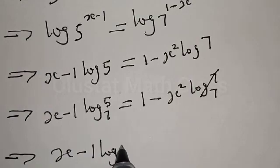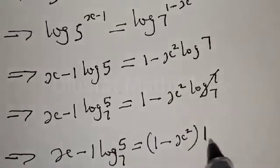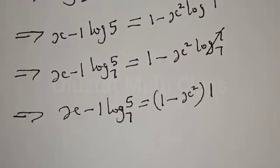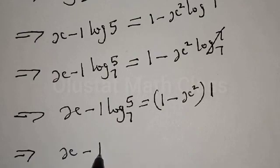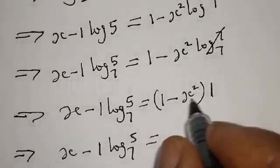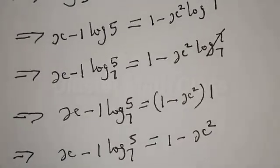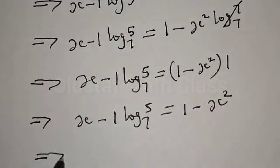Dividing both sides by log 7, this implies that we have x minus 1 times log 5 base 7 equal to 1 minus x squared, since log 7 base 7 is 1. Opening the bracket, we have x minus 1 times log 5 base 7 equal to 1 minus x squared.